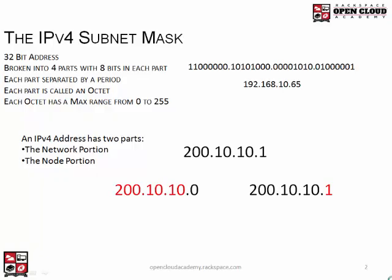So now we're going to be talking about the IPv4 subnet mask. They go hand in hand. A review from the last video: an IPv4 address is a 32-bit address broken up into four parts — four octets, eight bits each. The max range of numbers for each octet is zero to 255 in decimal. So if it was all zeros that would be a decimal zero, and eight ones would be 255.